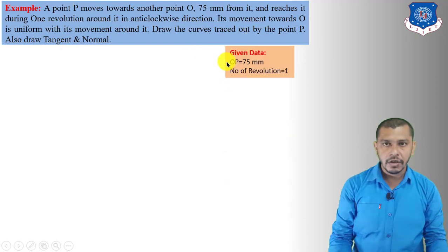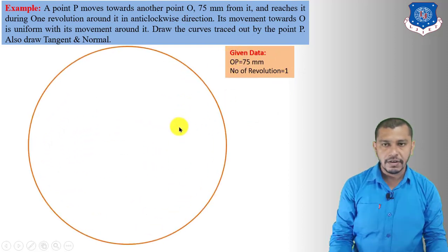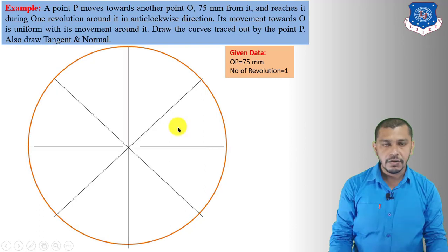The given data: distance O to P is 75 mm, and the number of convolutions is one. First, draw a circle having radius equal to 75 mm and divide the circle into eight equal parts. This center will be the pole of the spiral.